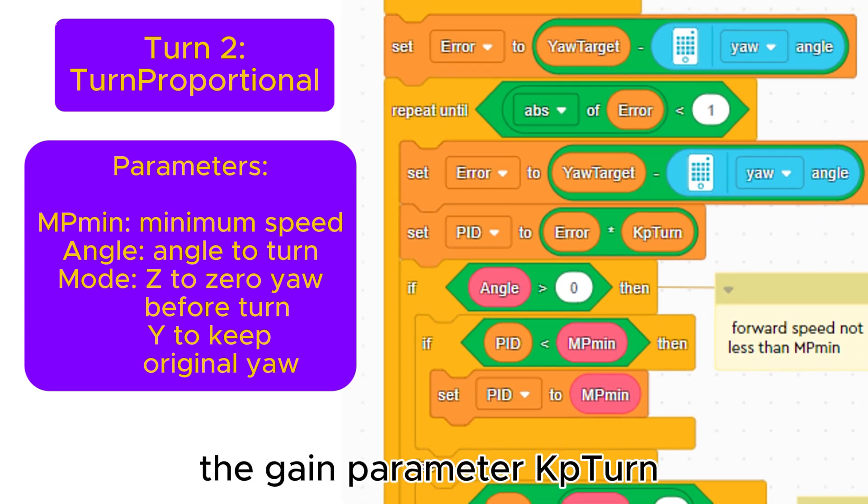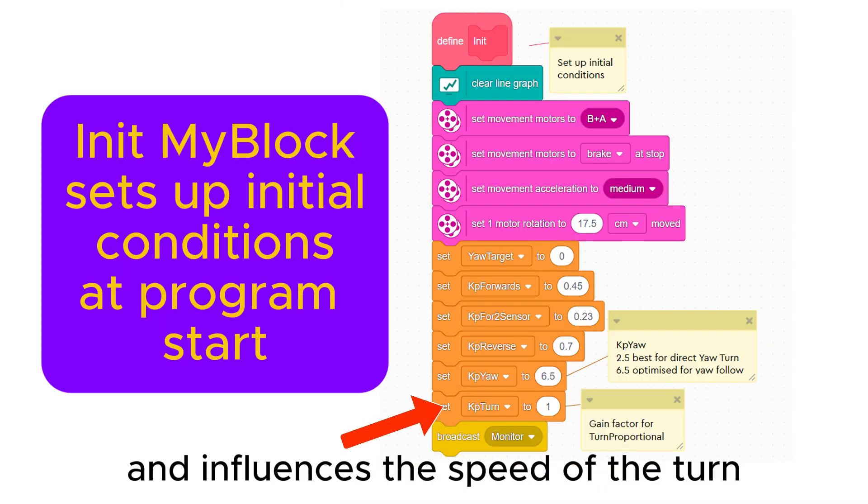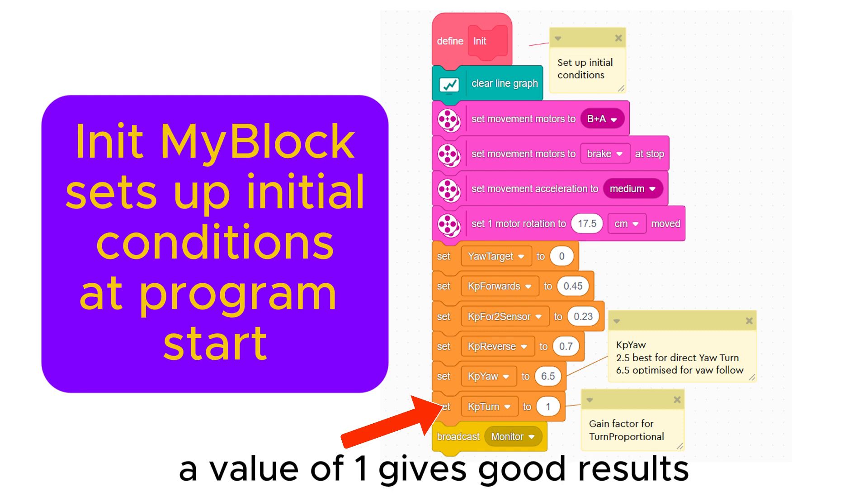The gain parameter Kp turn is set in the init my block at the program start and influences the speed of the turn. A value of 1 gives good results.